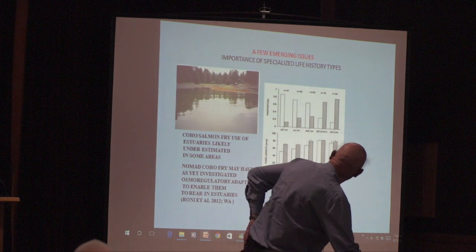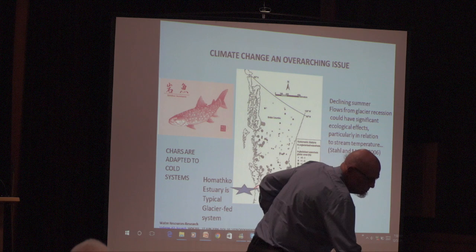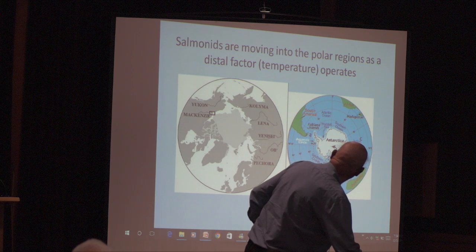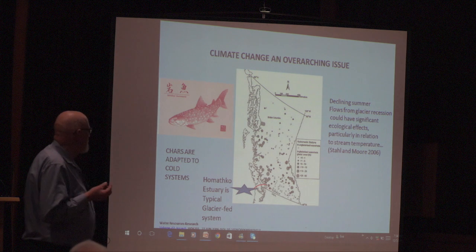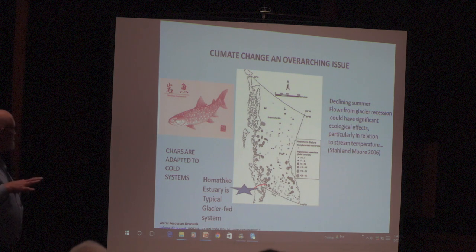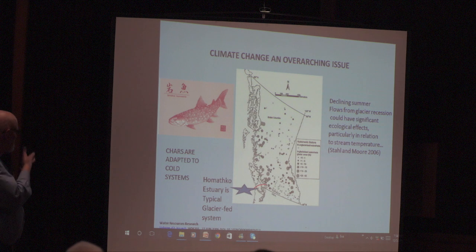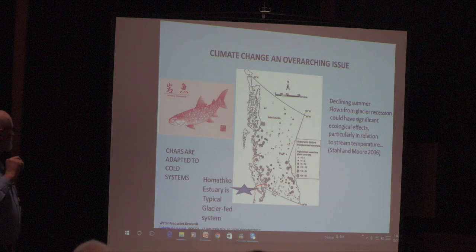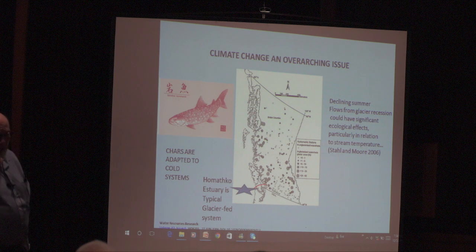I've already mentioned the fact that salmon are moving around as temperature warms. Another local issue that might be important is the warming of the climate and the melting of glaciers — many of these species are adapted to cool systems. There's a Japanese species very similar to Dolly Varden or Bull Trout present in Hanathco up in Bute Inlet, not Campbell. Declining glacier flows could have an influence on those as well. So over and above all the local estuary phenomena, there is the climate change issue.